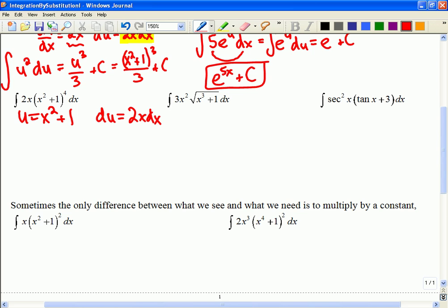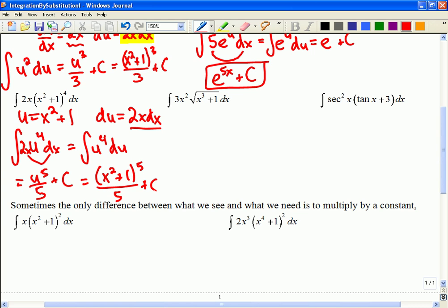And then everything nicely lines up there. So I should be able to replace this as the integral of u to the 4. And that 2x dx, those two pieces, I could pull those out and say this is the integral of u to the 4 du. So that's just going to be a power rule backwards. So u to the 5 over 5 plus a constant. And to us, u is equal to x squared plus 1 to the 5 over 5.